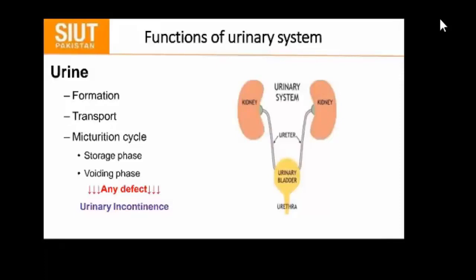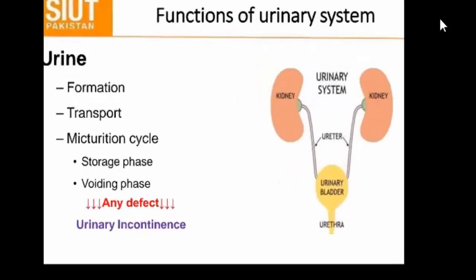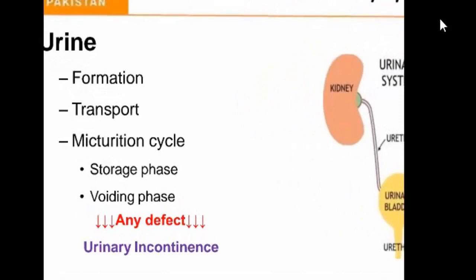These are the functions of the urinary system. There is the formation of urine as well as transport, and there are two phases basically in a micturition cycle. The very first one is the storage phase and then the voiding phase. If there is any defect in the storage or the voiding phase, the consequence is very important.